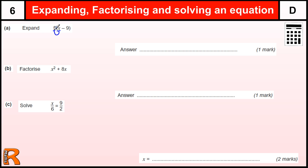We need to remember to multiply the 5 by the two terms inside the bracket, so 5 times x is 5x, and the 5 times the minus 9 is going to be minus 45.